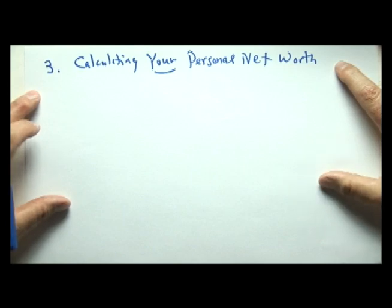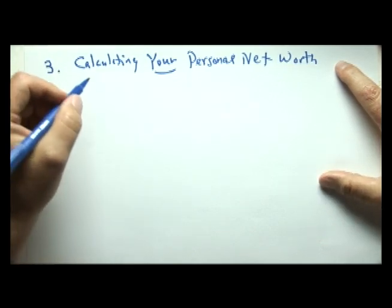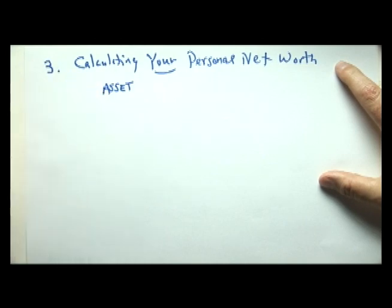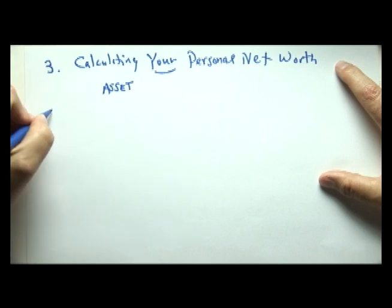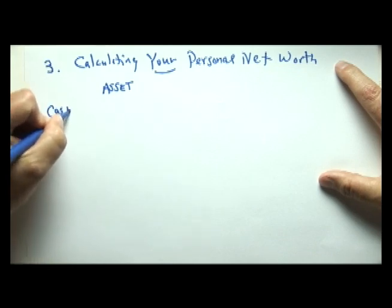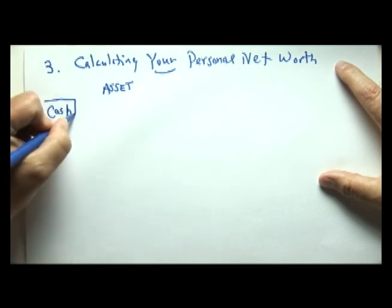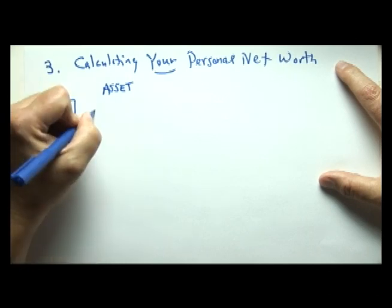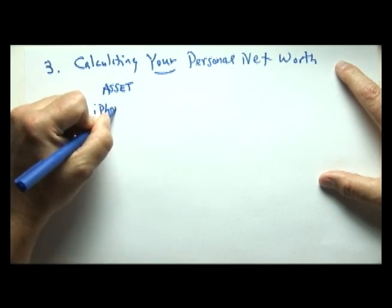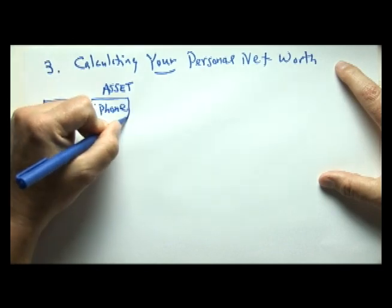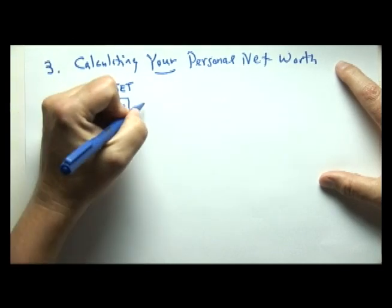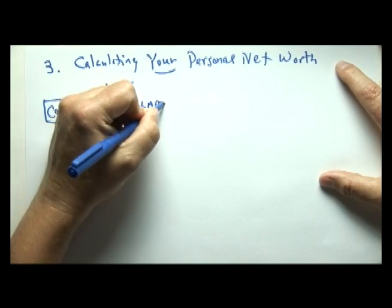Remember from last lesson: anything owned is called an asset. So if you personally — let's say you're a college student — you own some things. Starting with what's in your pocket: cash and bank. Let's also say you own an iPhone. What else might you own that is of value? Let's say you own a laptop computer.